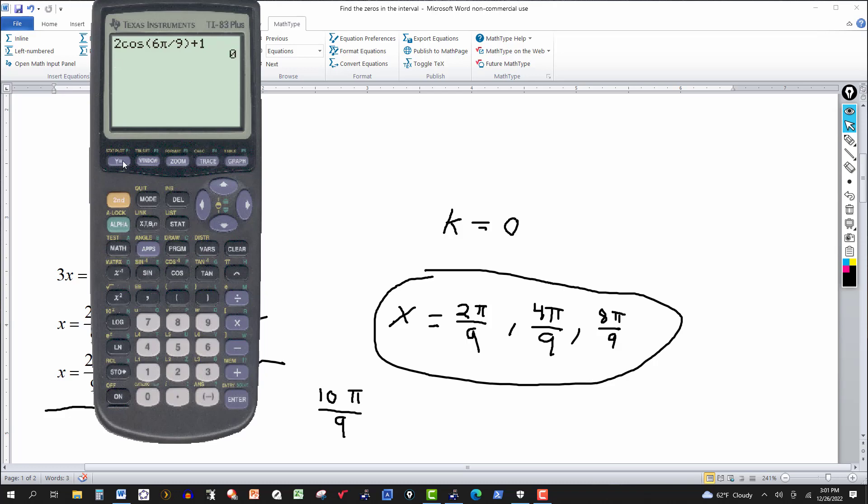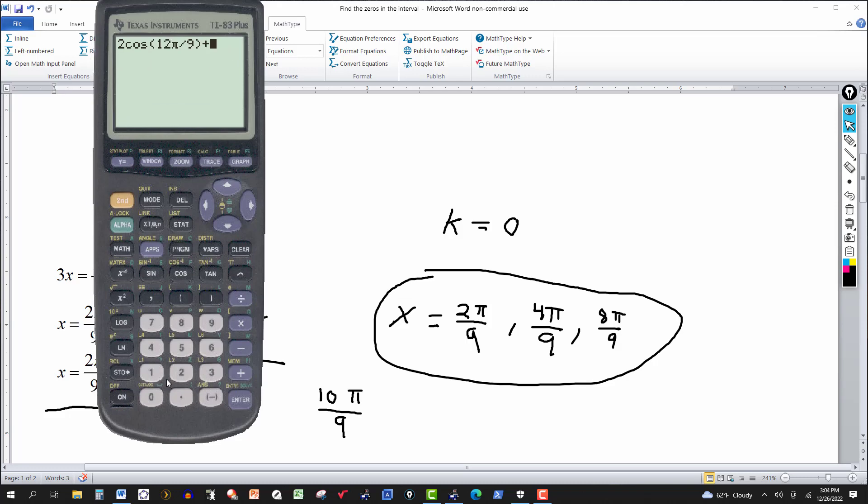Let's try the next one. So instead of typing all this again, I'm just going to hit 2nd and entry. So I get the next one. I'm going to plug in 4π over 9. So that's going to be multiplied—since it's 3x, that gets multiplied by 3. So this gives me then, hit enter. That gives me 0. That checks out.